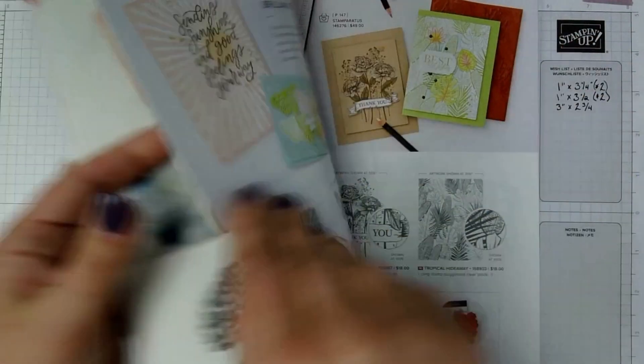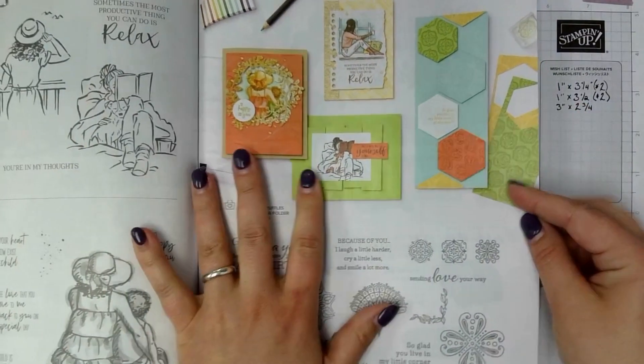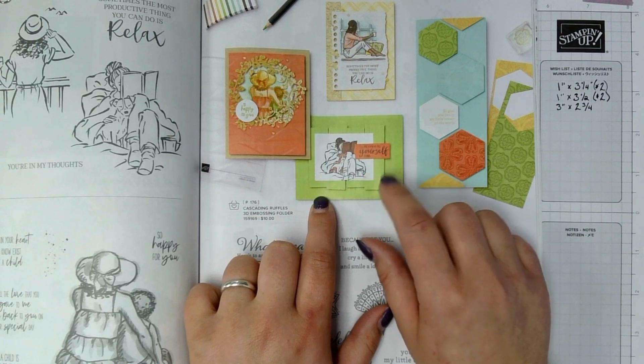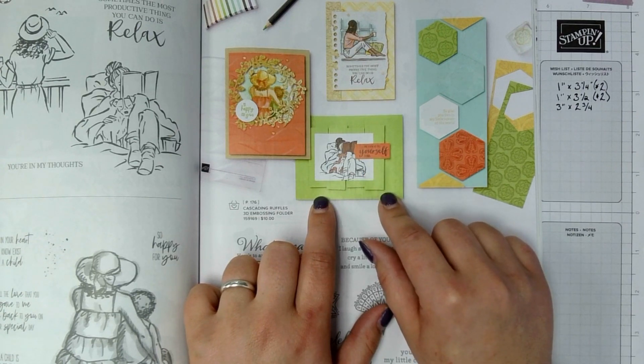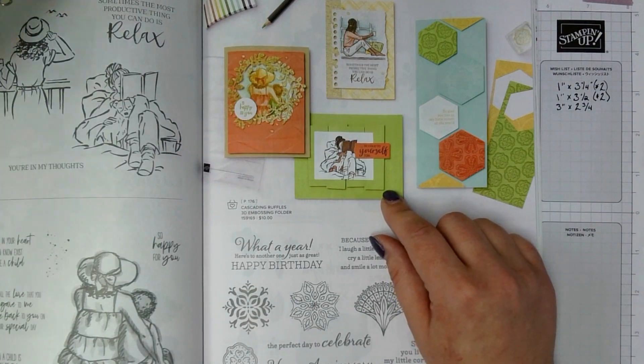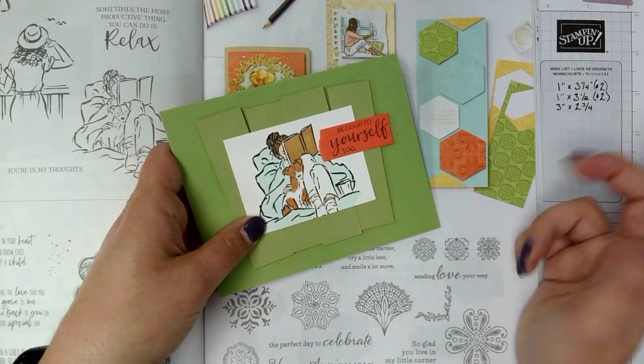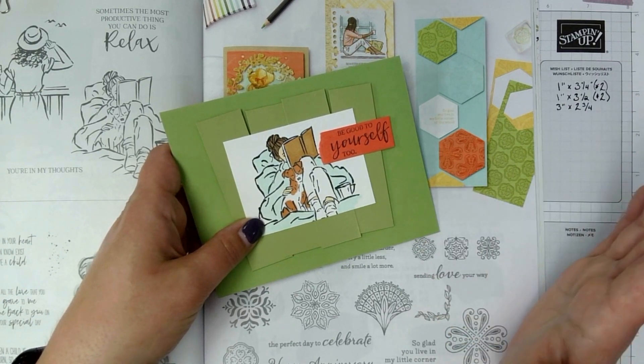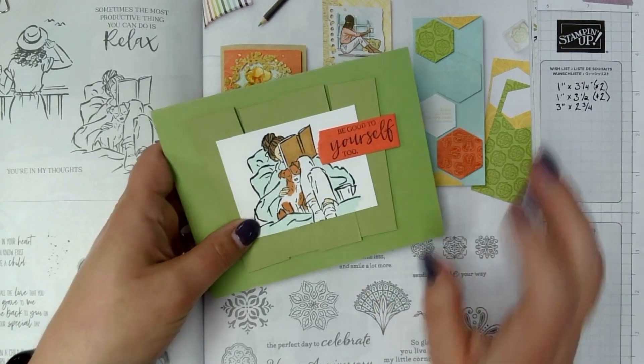You can find the stamp set on page 112 and the card that I'm casing from the catalog today is this one here. And I have gone ahead and made one of these. Super easy. This is a great card for a beginner if you have just a few Stampin' Blends or you could even switch it up and use the watercolor pencils.